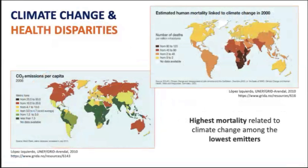These two maps show just how glaring this climate gap could be. The countries with the highest per capita CO2 emissions — like the US, Canada, and Russia — have some of the lowest mortality linked with climate change. Meanwhile, areas with the lowest per capita emissions, like sub-Saharan Africa and South America, suffered the highest climate-related mortality rates.